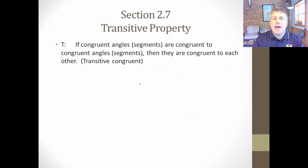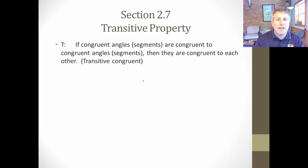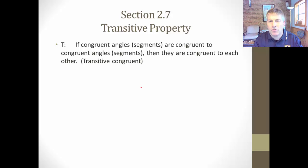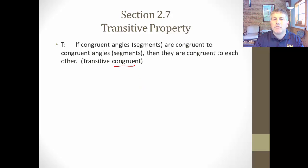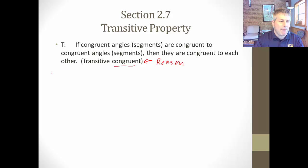Just like we had addition congruent and subtraction congruent, we're going to have 'transitive congruent.' This goes for both angles and segments. If congruent angles are congruent to congruent angles — or segments — then they are congruent to each other. So 'transitive congruent' would be your reason that you use in proof.